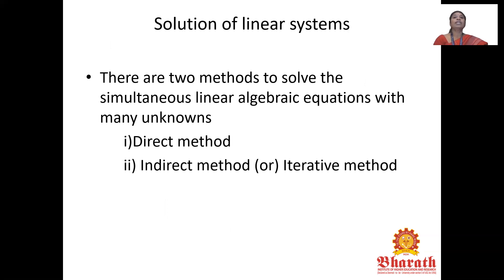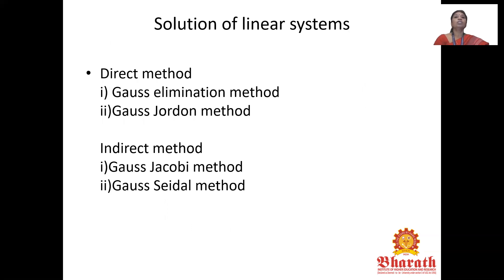Now we deal with the solution of linear systems. There are two methods to solve simultaneous linear algebraic equations with many unknowns: the direct method and the indirect method (also called the iterative method). The direct methods are Gauss elimination (Gaussian method) and Gauss-Jordan method; the indirect methods are Gauss-Jacobi method and Gauss-Seidel method.